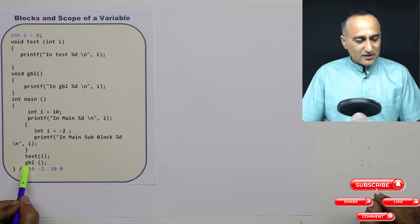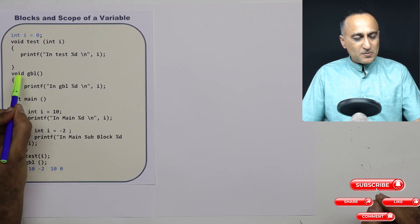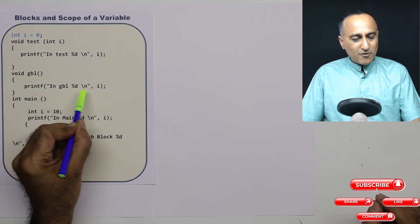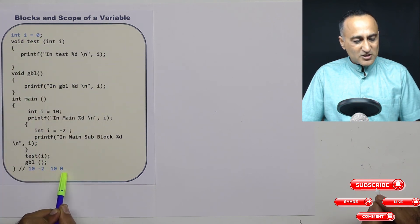Now I come back here. Now when I see GBL, when I am calling GBL, I am not sending any data to GBL. So when I print the value of i in GBL, it is printing this value of i which is zero.